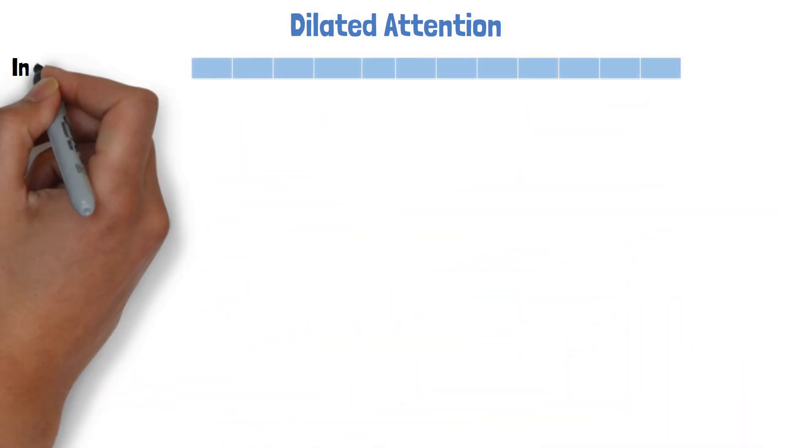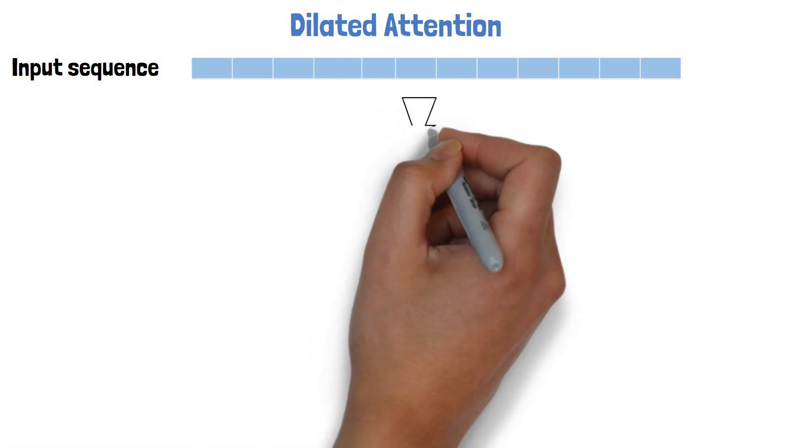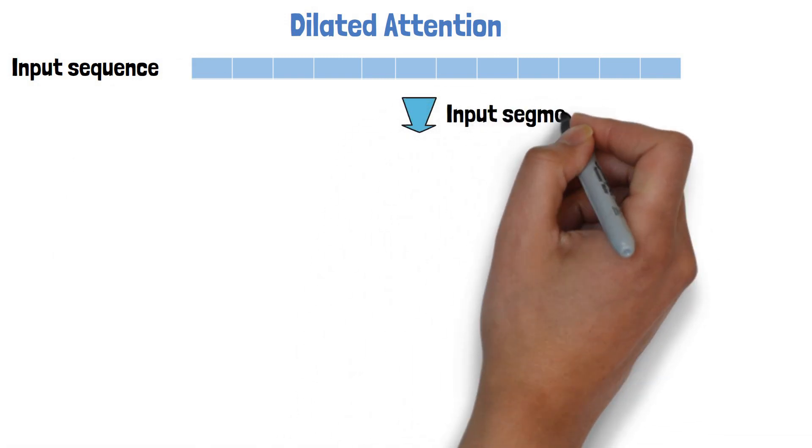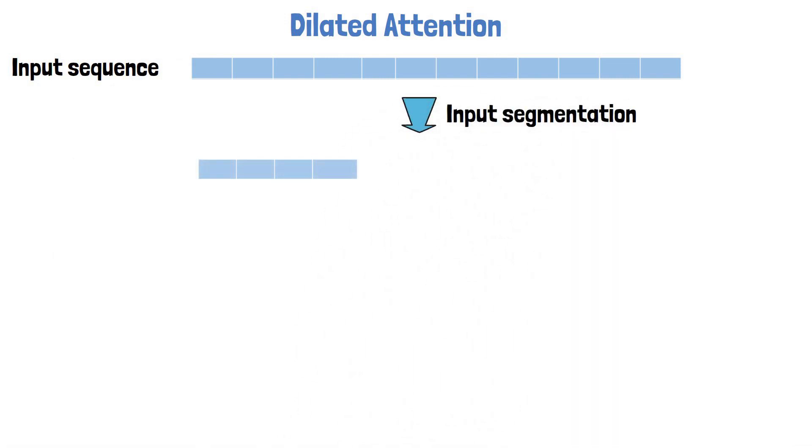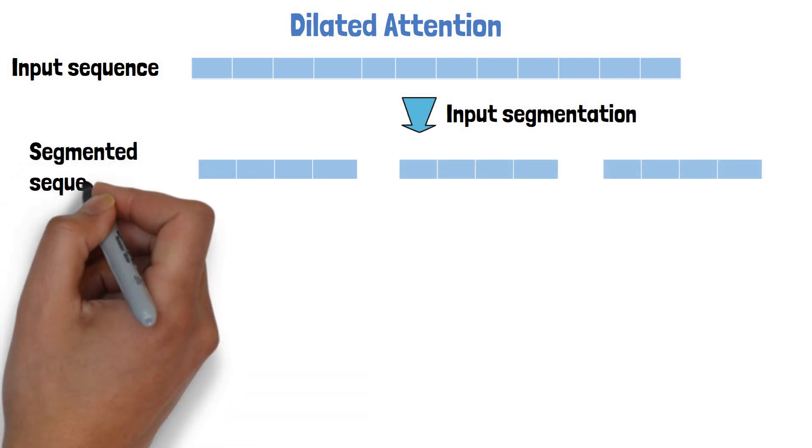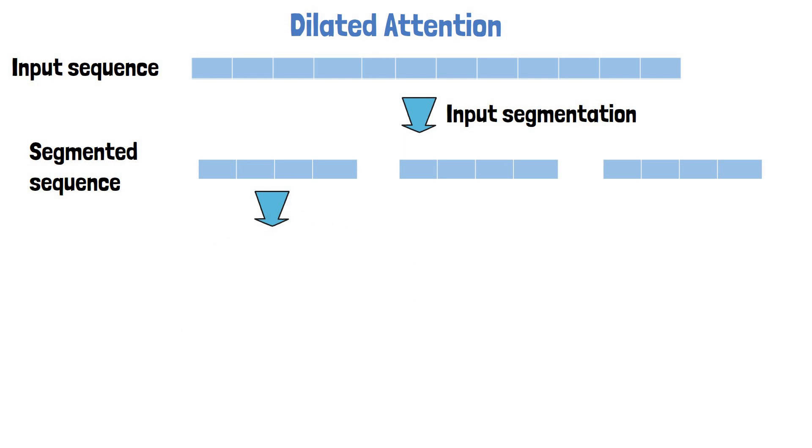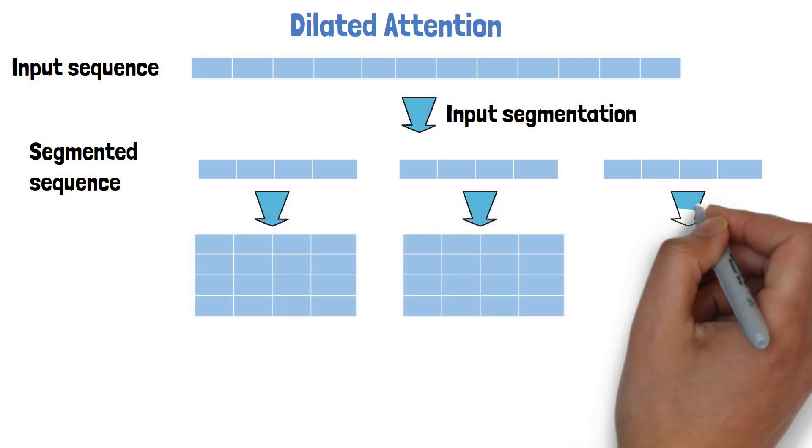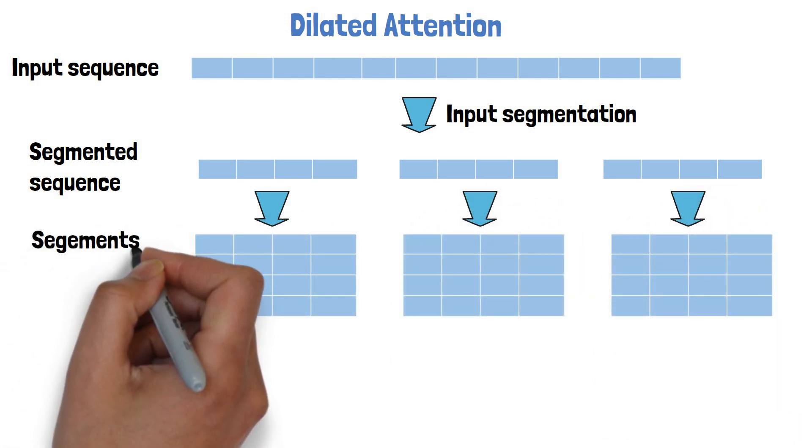With dilated attention, we take the input sequence and do input segmentation to split it into equal segments. So here we get 3 segments of size 4. The attention is calculated separately for each segment, so here we would get 3 attention matrices of size 4x4 rather than 12x12 as before.